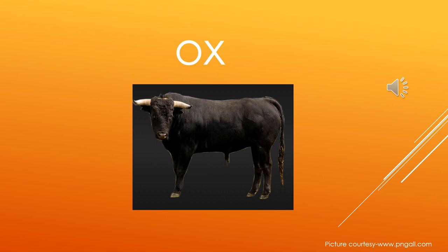Can you see this animal? It looks like a cow. It is ox. The sound of O is 'O' and X is 'KS', so ox.